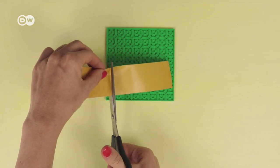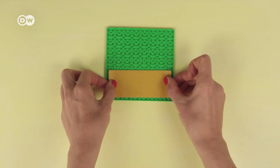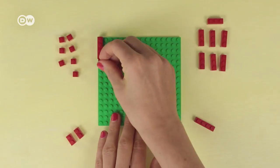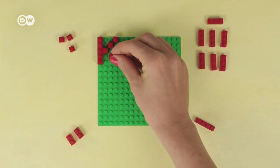Start by cutting two strips of tape and sticking them to the back of the Lego plate. Next, press the individual bricks onto the plate to spell out the word keys.